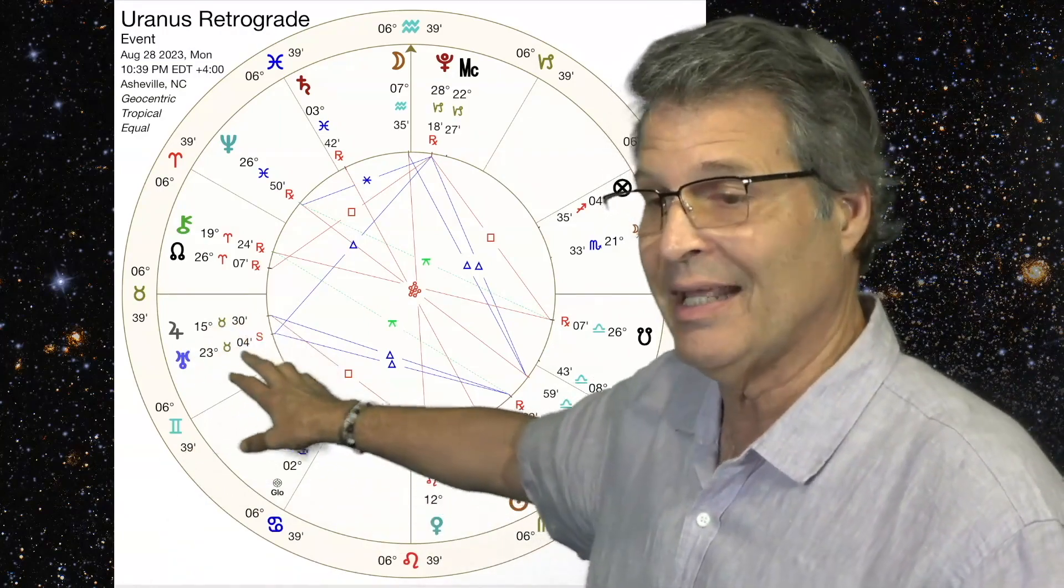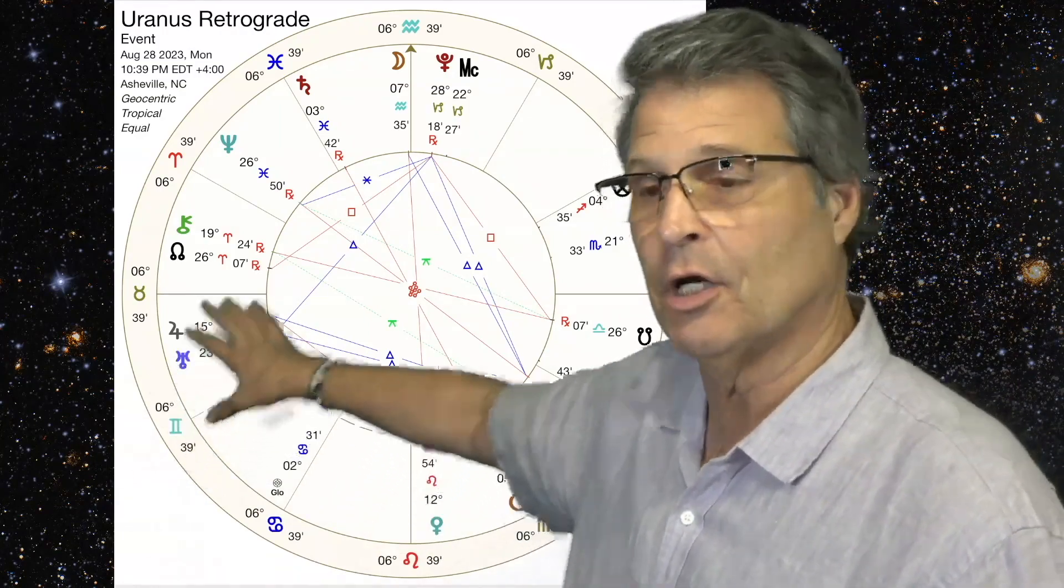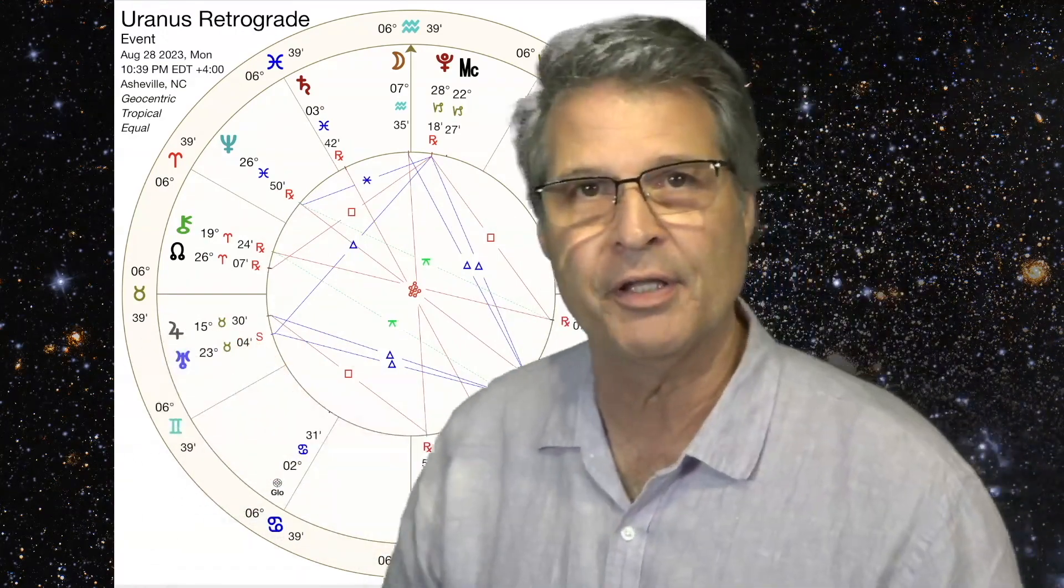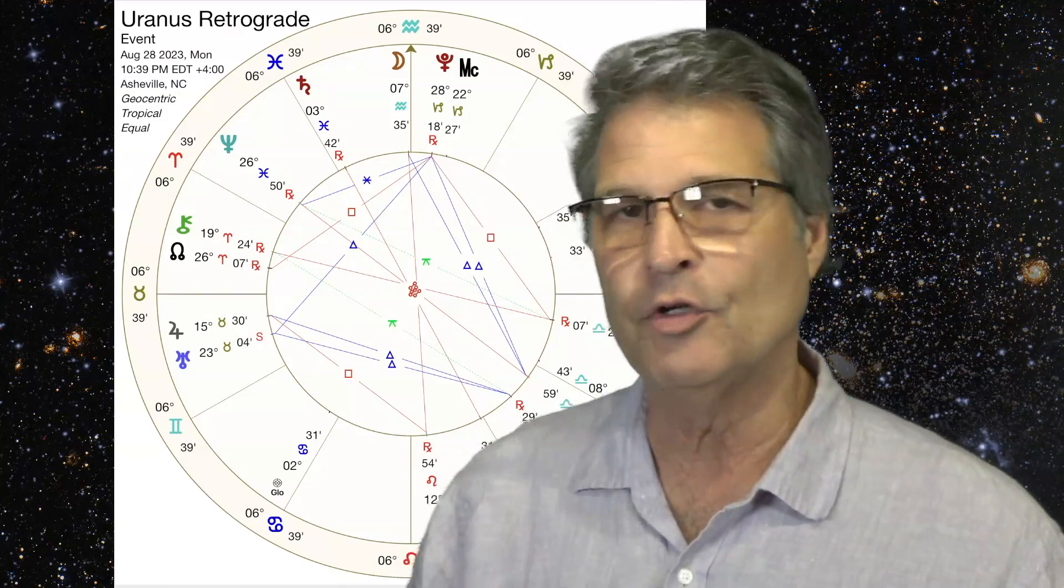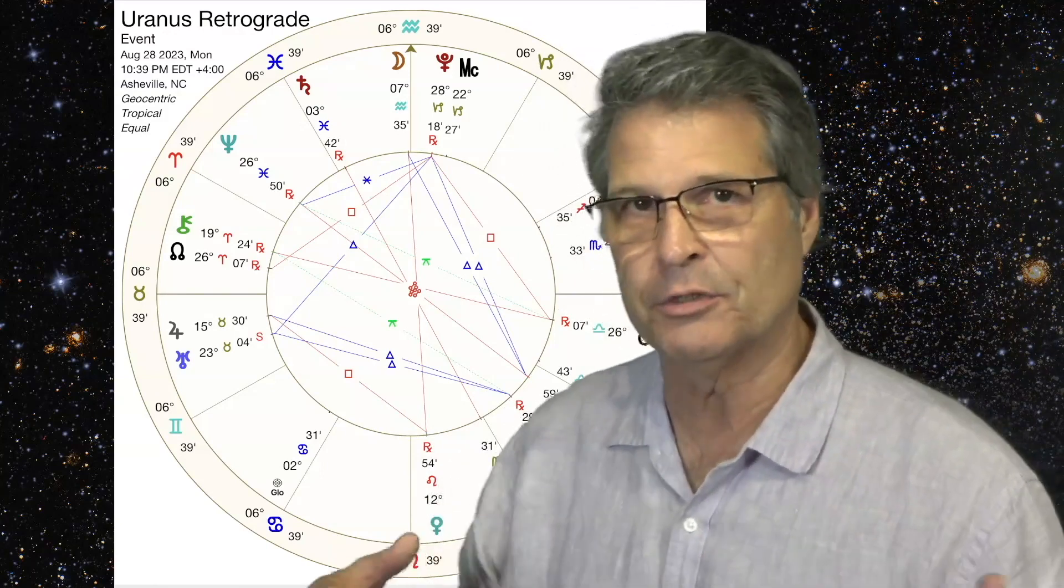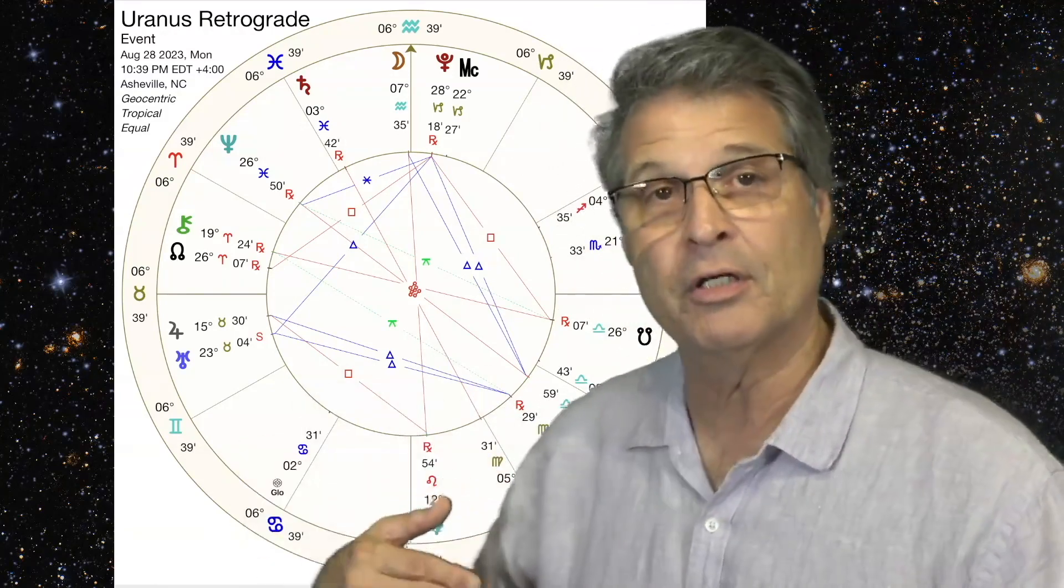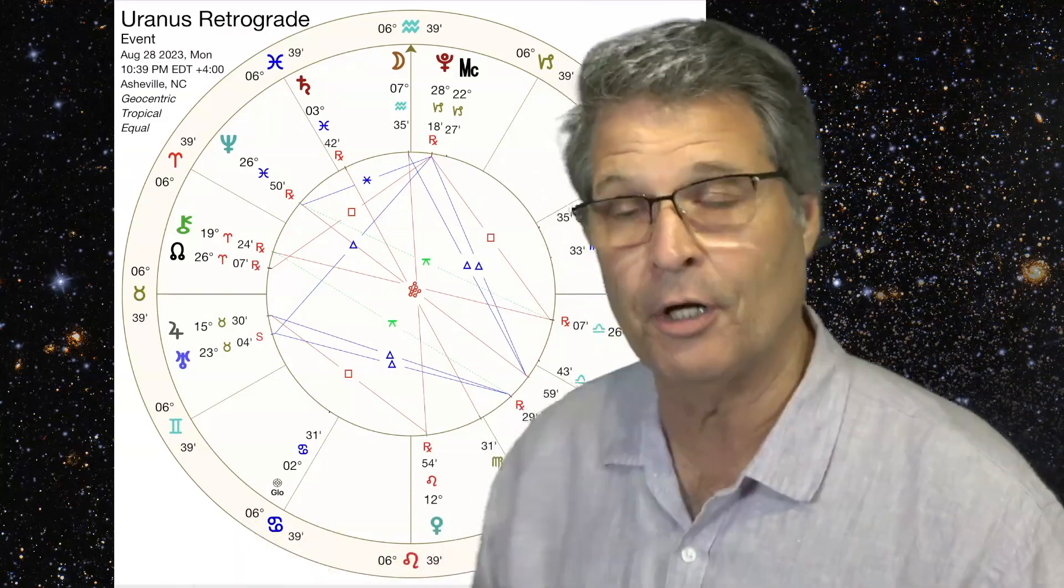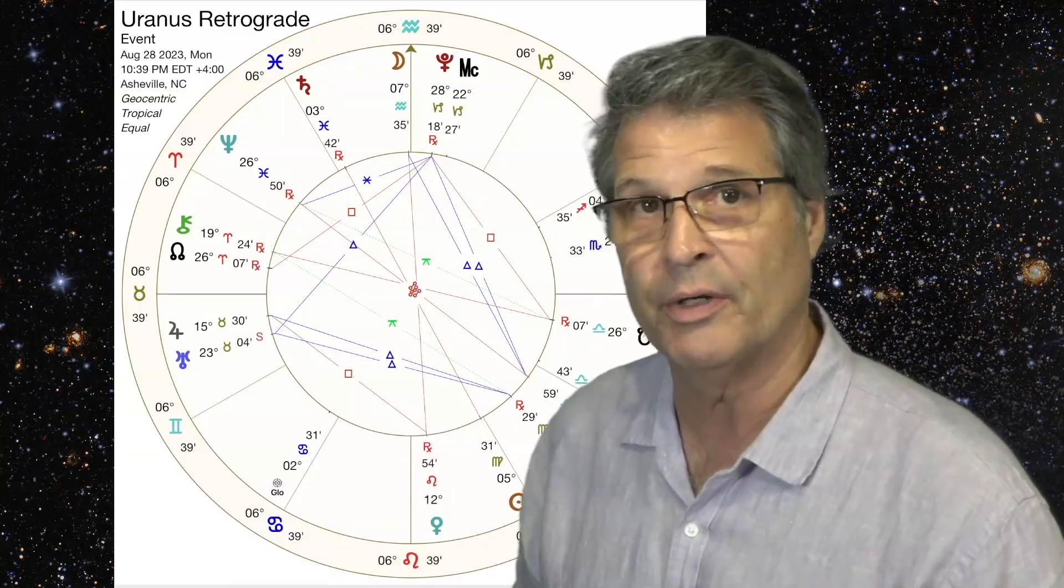As Uranus goes retrograde, it is in the first house of this chart. And this is like a natal chart for, specifically, this Uranus retrograde. You can do this with any astrological change. Yesterday, we talked about Mars moving into Libra, and we showed that as a natal chart. This is like a natal chart for this Uranus retrograde.